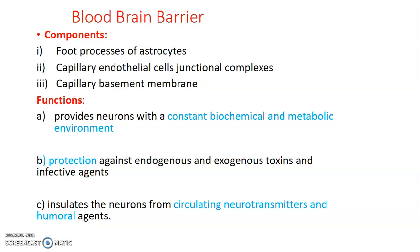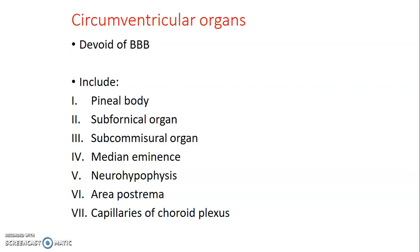Circumventricular organs are organs that lack blood-brain barrier. They lack it because, for example, organs that produce hormones need to release them effectively, or organs that respond to chemicals — such as the area postrema — need to detect those chemicals in the blood. These organs include the pineal gland, subfornical organ, subcommissural organ, median eminence, posterior pituitary (neurohypophysis), area postrema, and capillaries of the choroid plexus.